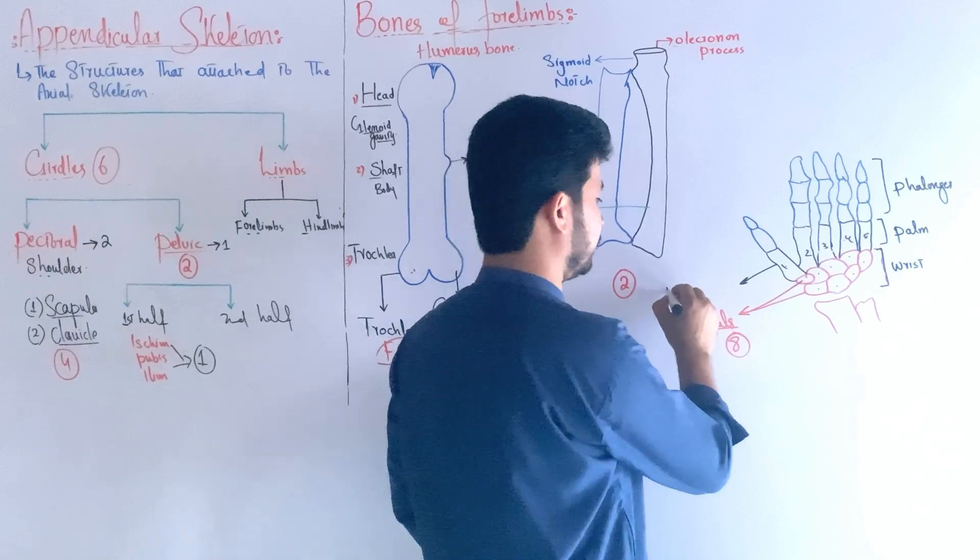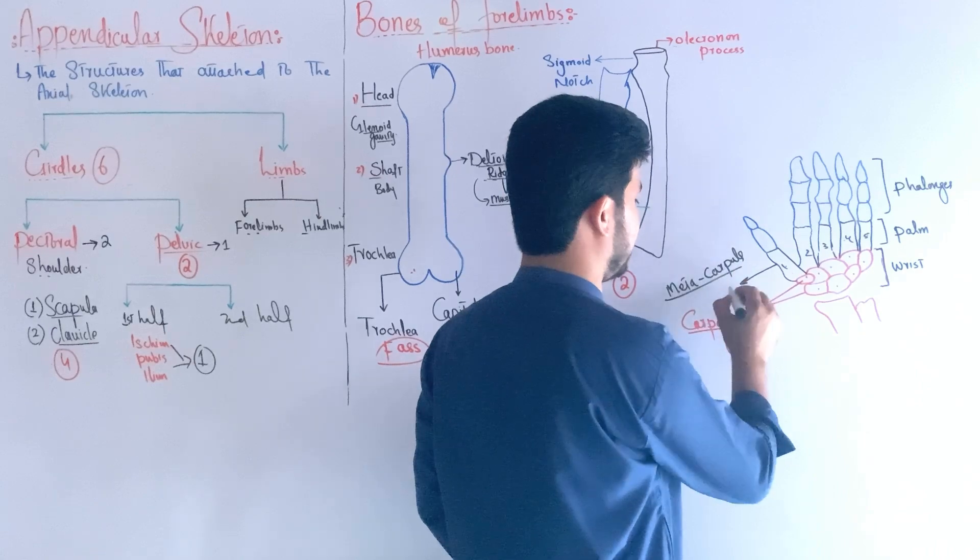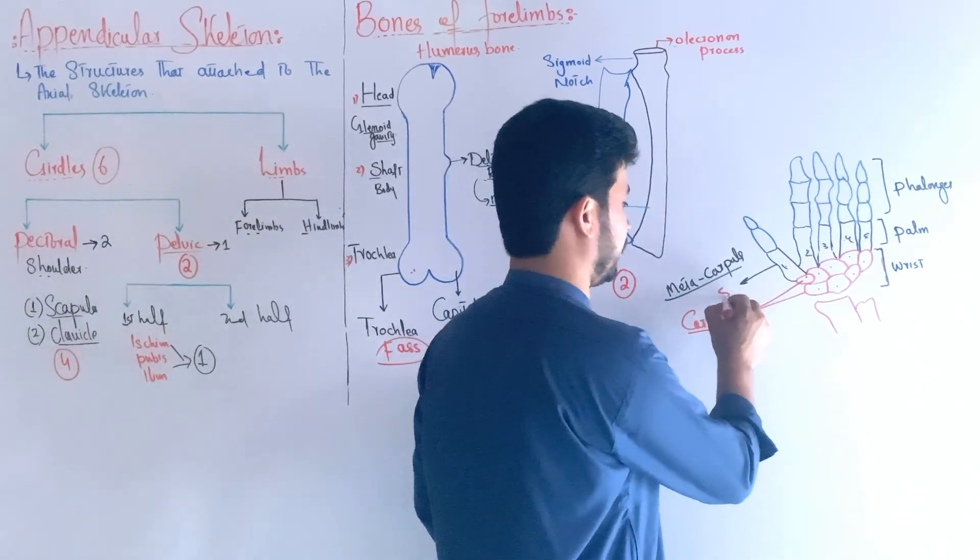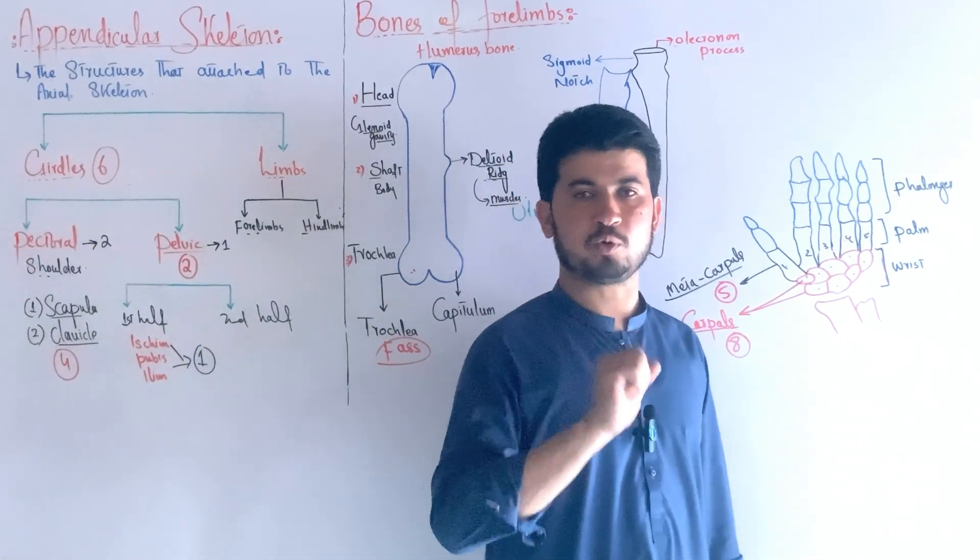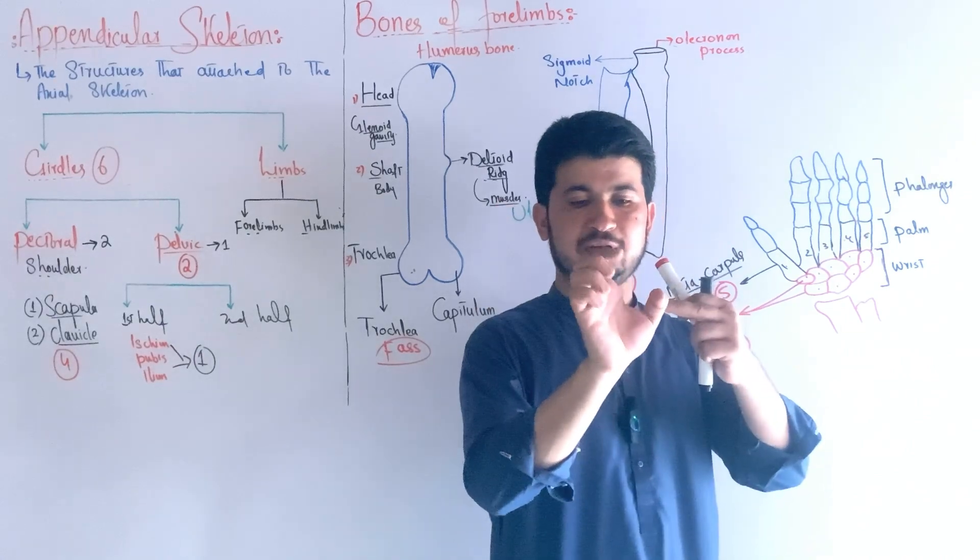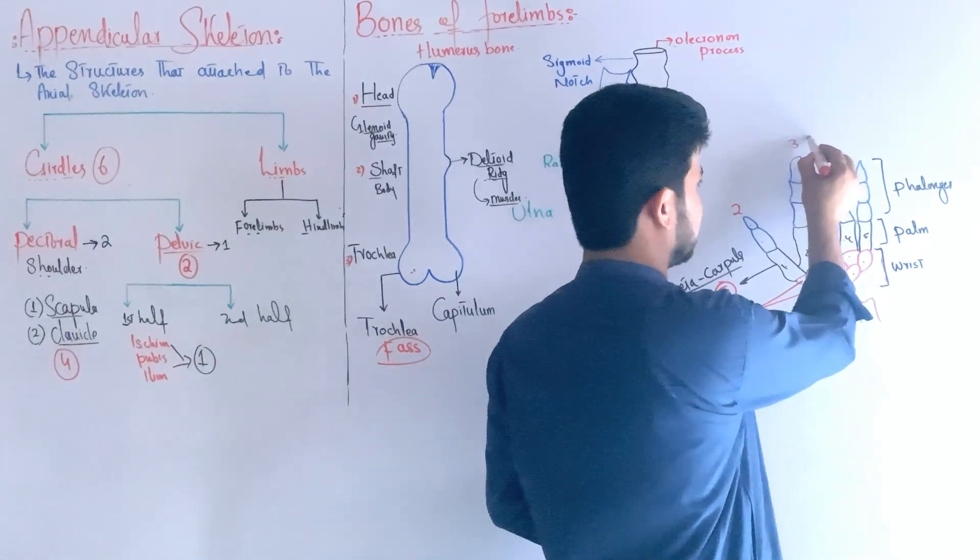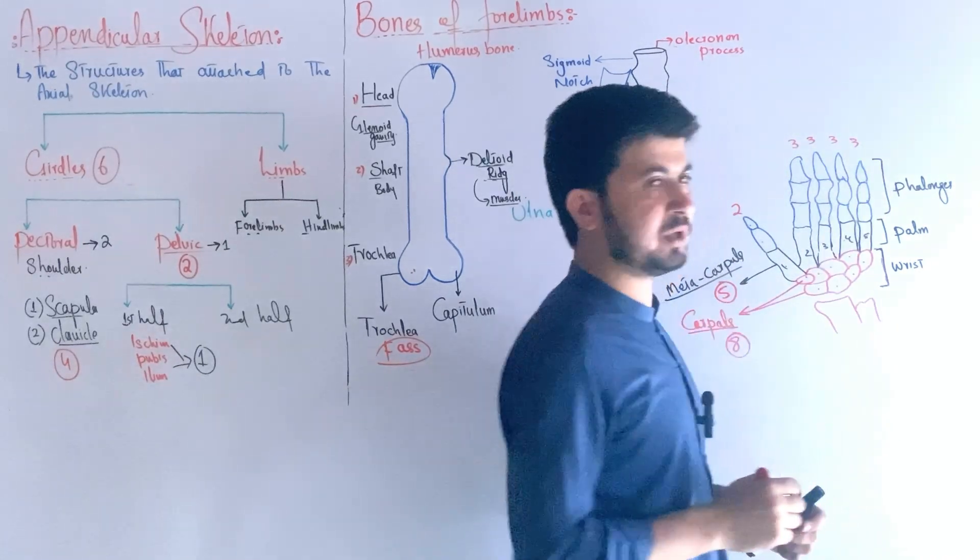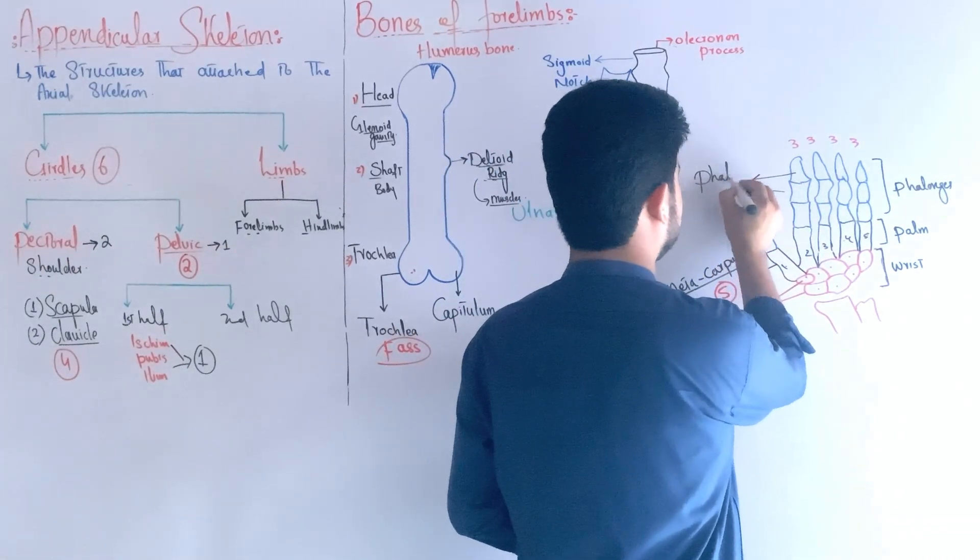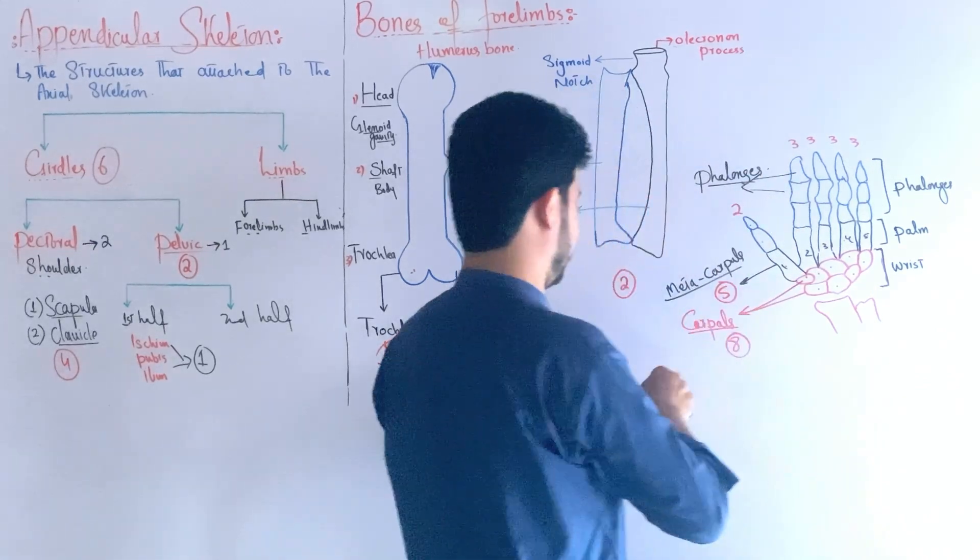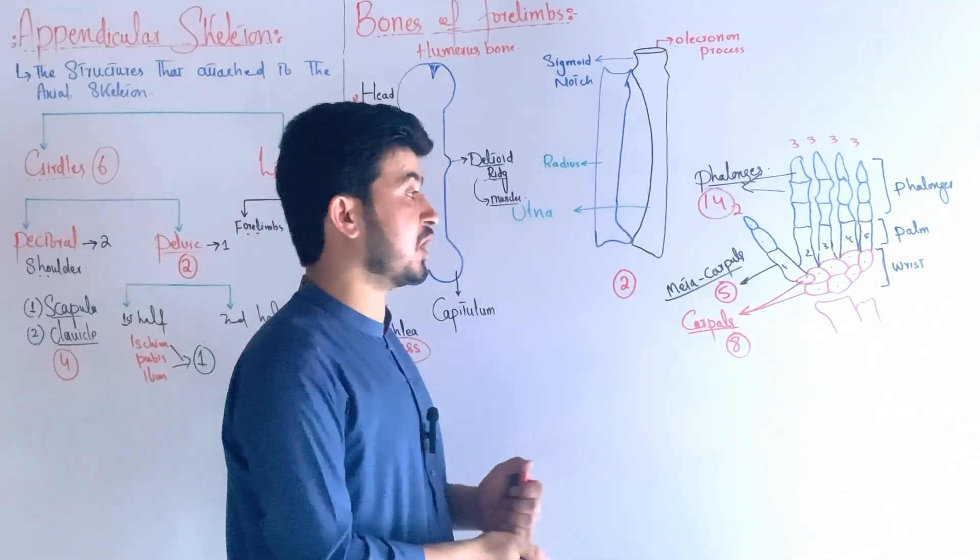The metacarpals are numbered one through five. The fingers have bones called phalanges. Each finger except the thumb has three phalanges. The thumb has two phalanges. The total number of phalanges is fourteen.